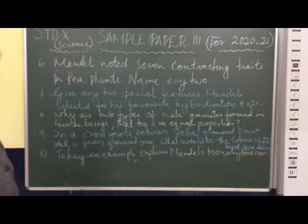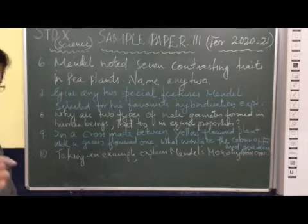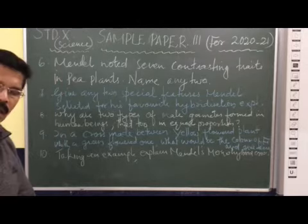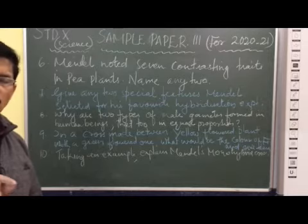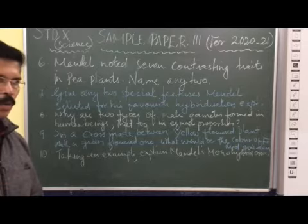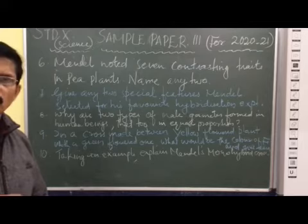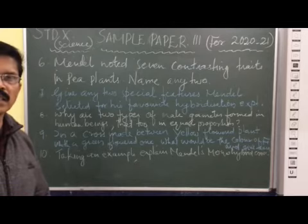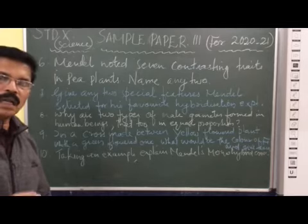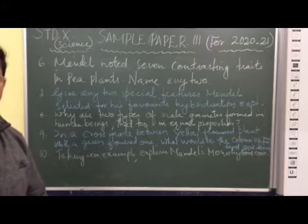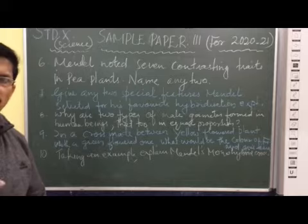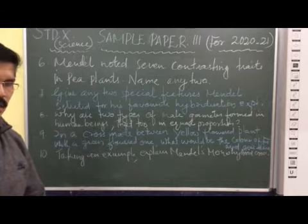In males, diploid human beings have each cell containing two sex chromosomes - XY. During meiosis, this X and Y separate and enter the gametes.